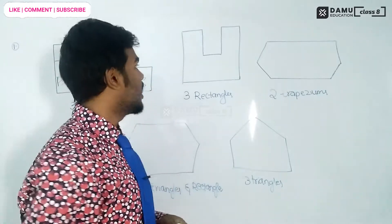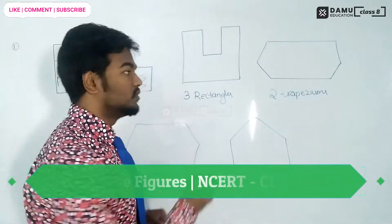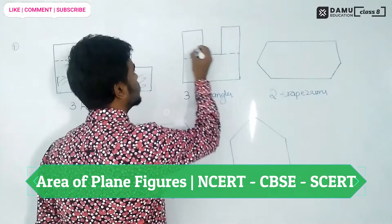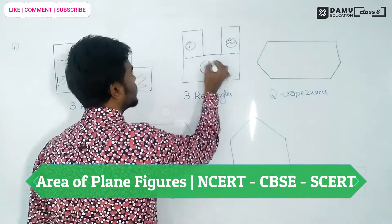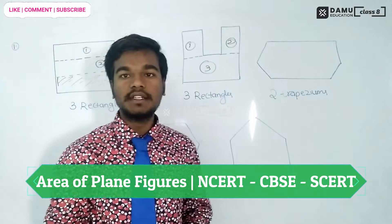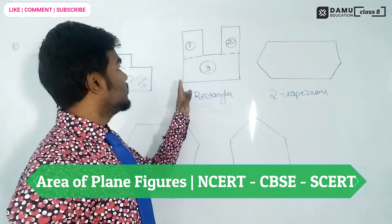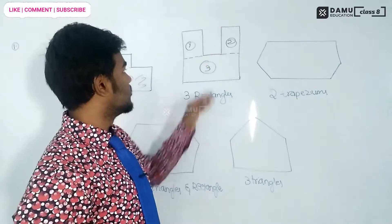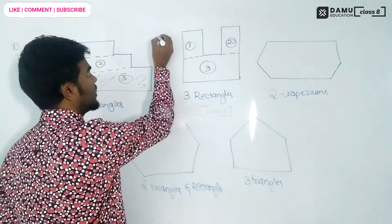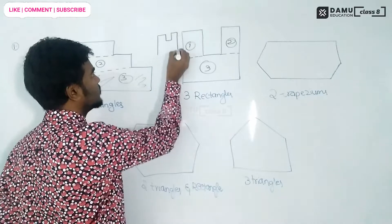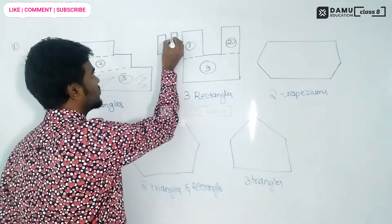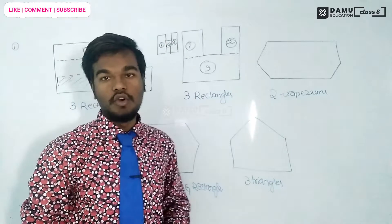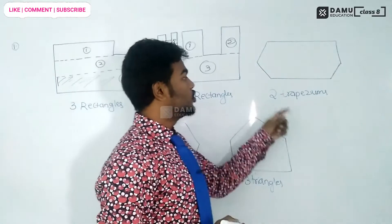For the next shape, we also have to divide it into three rectangles. You can make it like this — this is one, this is second, this is third — three rectangles. You can also divide it differently, like this: one, two, three. So you can make it like that also, no problem.